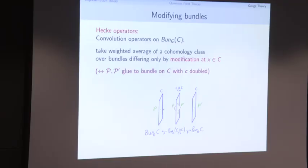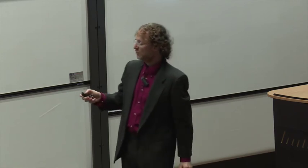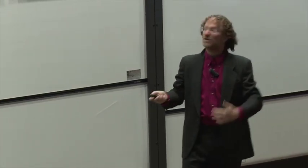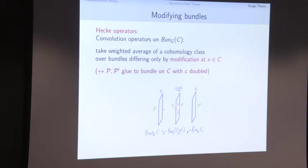These are convolution operators acting on cohomology classes of the space of G-bundles. They take a fixed bundle and average over bundles that differ from it only at a single point — only by modification at that point X. Here's an attempt to draw that: I have a Riemann surface C, a particular point X, a bundle P, and I study bundles P' that differ from P only at this one point — identified away from this point. Since the bundles are identified away from X, you can glue them together and think of blowing a little air bubble — a 'bubbling' — getting a bundle on the surface with twice the point X, identified outside X but not at X.